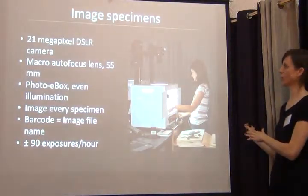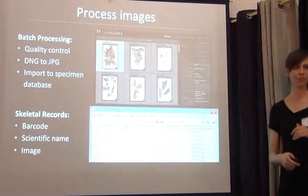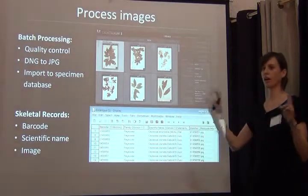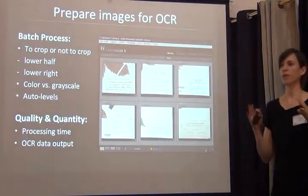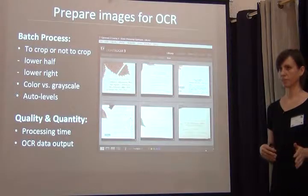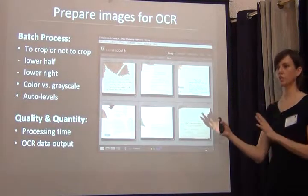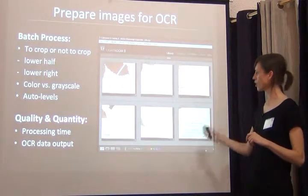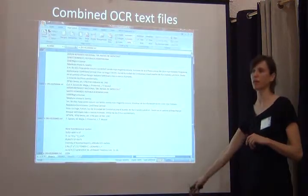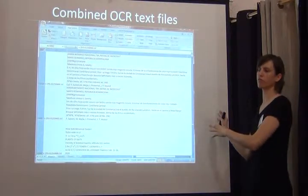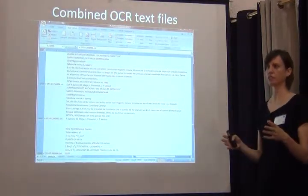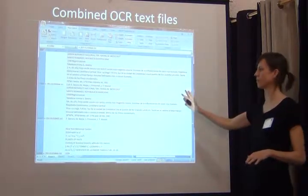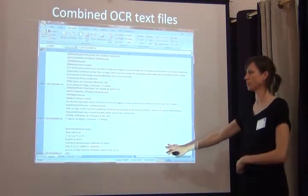Then every one of those specimens is imaged, images are processed and attached to the skeletal record, and we prepare all those images for OCR. Each label only has these skeletal records. They all go into ABI, and we create a big spreadsheet of information. All the raw OCR text gets attached to the skeletal record — you don't have anything broken out into fields yet, just a massive amount of information in a single field.